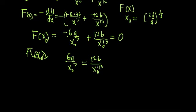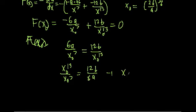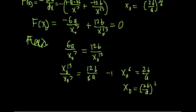We multiply both sides by x₀^13, then divide both sides by 6A. This gives x₀^13 over x₀^7 equals 12B over 6A, which simplifies to x₀^6 equals 2B/A. Taking everything to the 1/6 power, we get that x₀ is equal to (2B/A) to the 1/6, which is exactly what we needed to show.